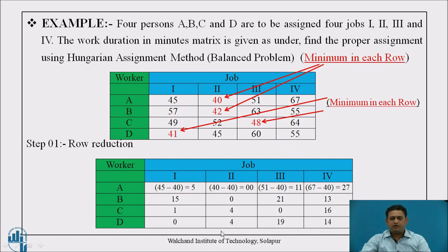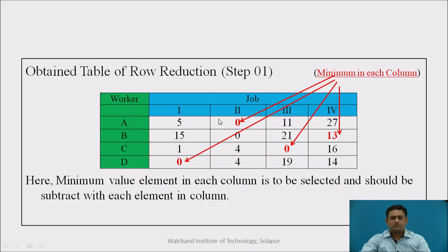This is the obtained table after row reduction. As per the Hungarian method rule, there is at least one zero in each row — there may be more than one, but at least one must exist. The second step is: after obtaining the row reduction table, we find the minimum value in each column — that is, for jobs 1, 2, 3, and 4.